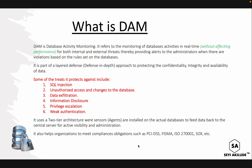DAM uses a two-tier architecture where sensors are installed on the actual databases to feed data back to a central server for active visibility and administration. On the monitored database, a sensor is installed that captures all activities — users logging in, trying to view a particular database, table, or record — and sends all those activities to the central server for the administrator to manage.